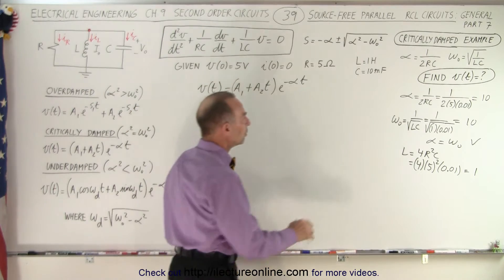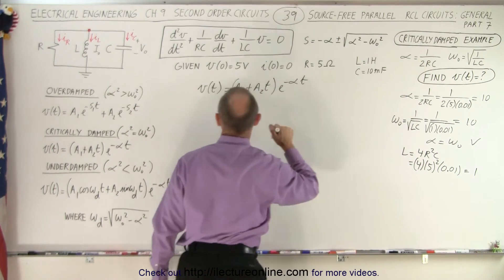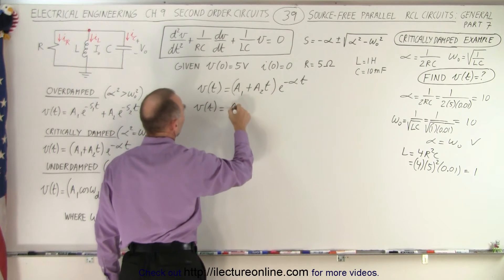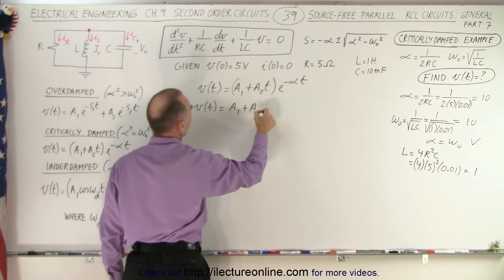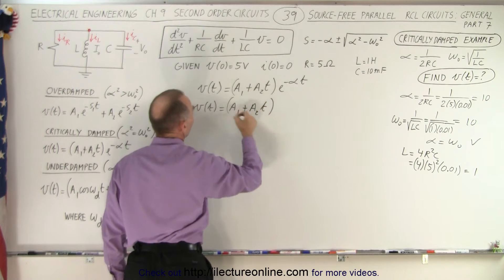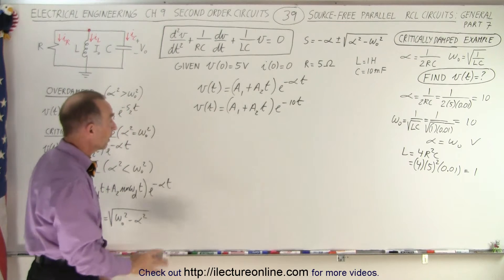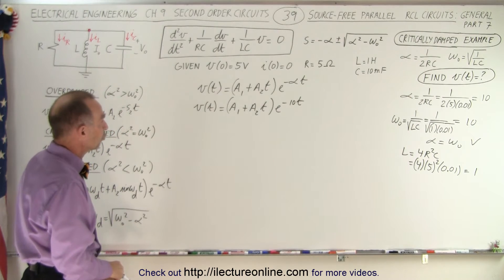So now that we know alpha, we can plug that into our general equation so the voltage as a function of time is equal to A1 plus A2 times T multiplied times E to the minus 10 times T. And now all we have left to do is to find A1 and A2.